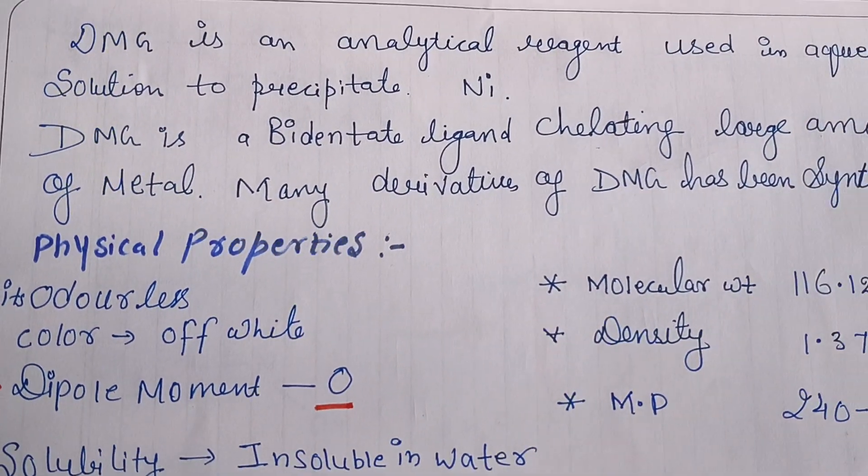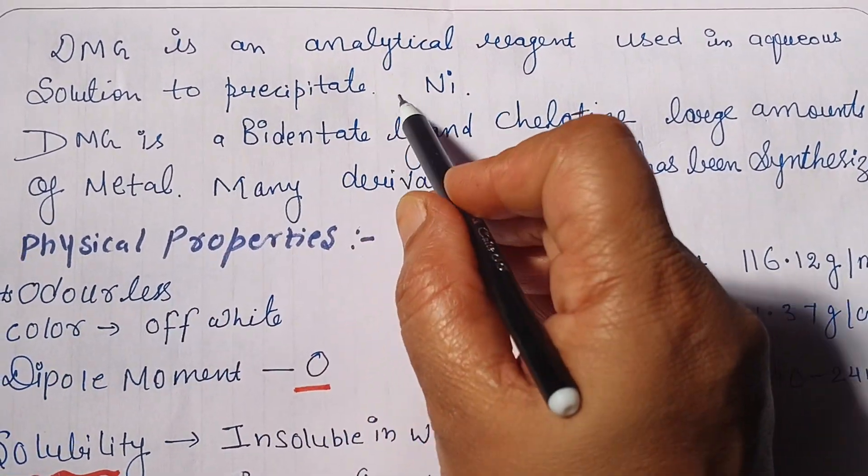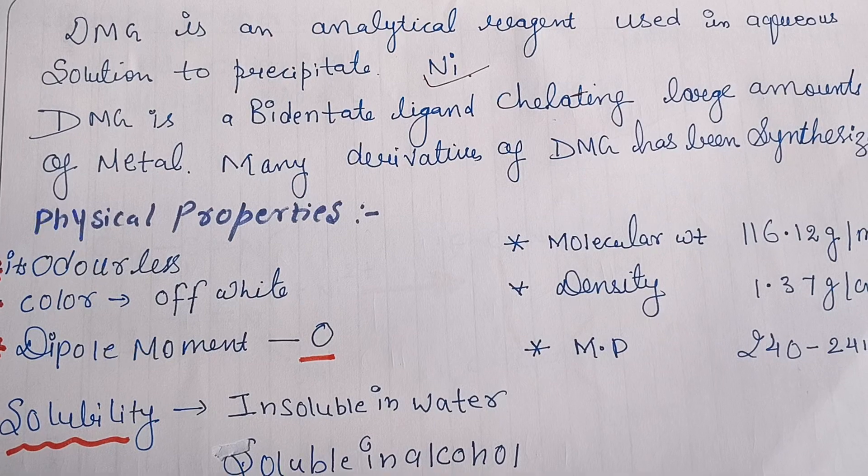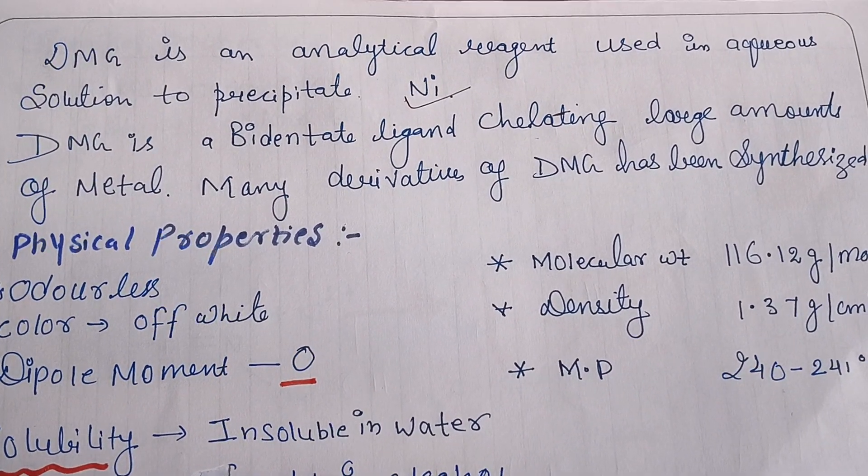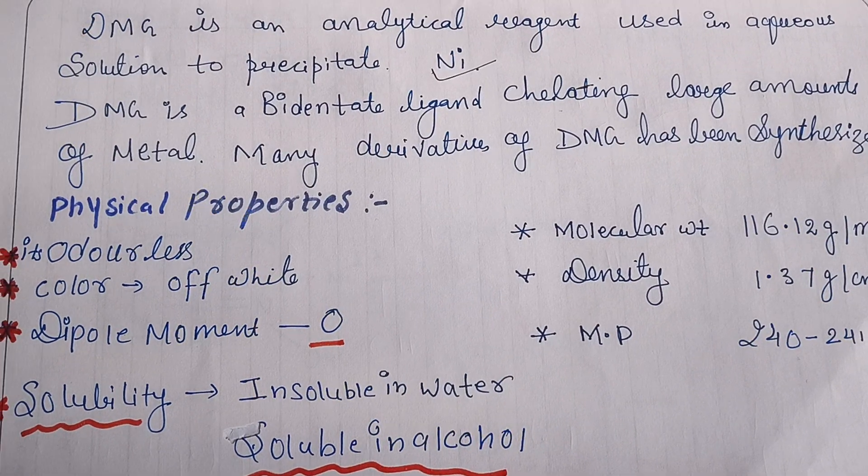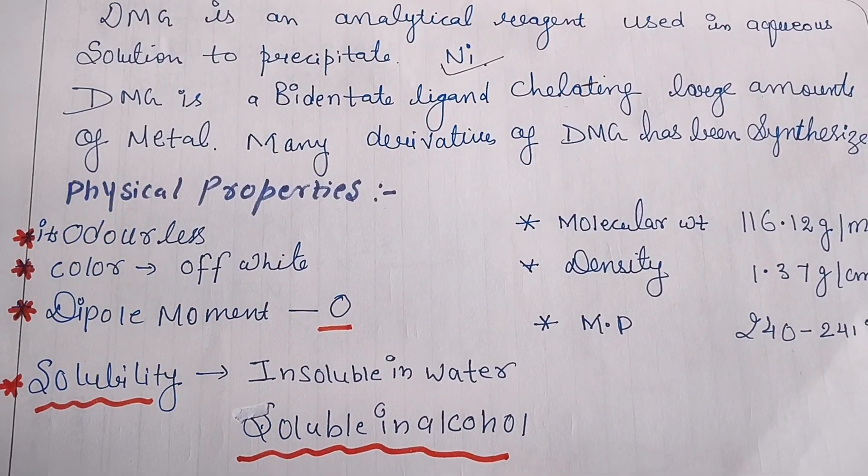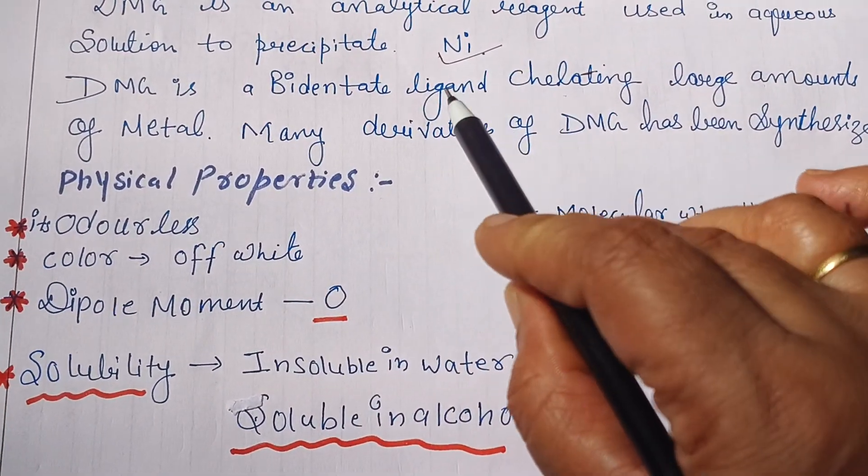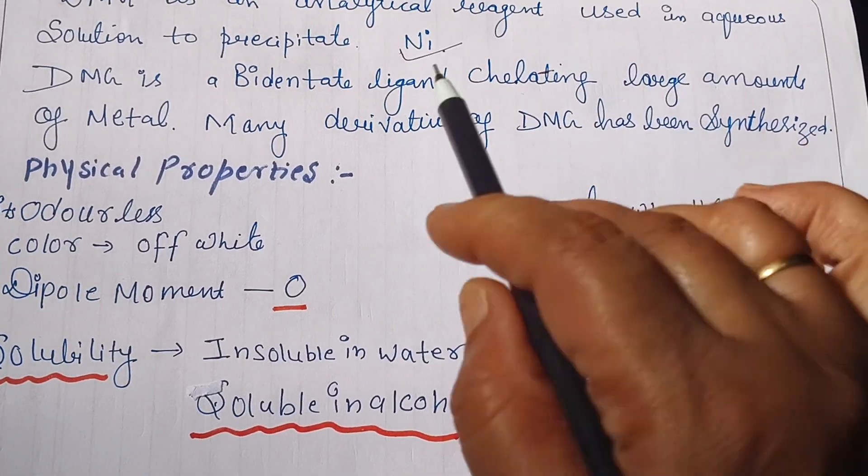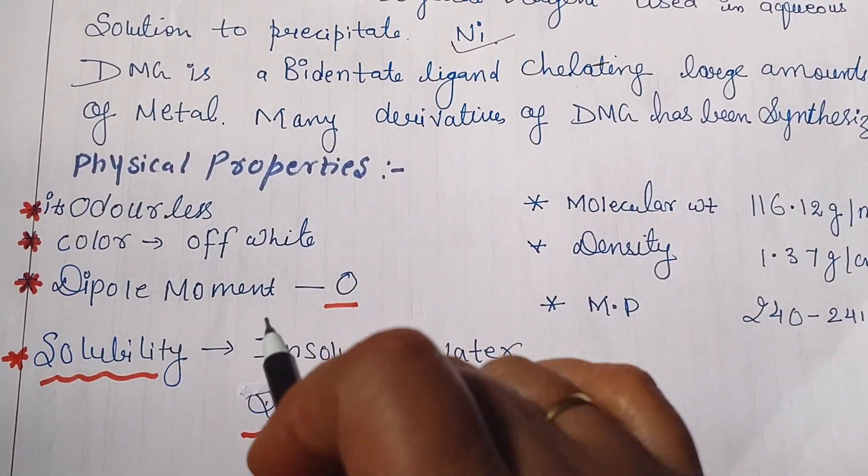It is an analytical reagent used in aqueous solution to precipitate nickel. Generally, nickel dimethyl glyoxime is used for gravimetric estimation of nickel as well as in inorganic chemistry. When doing complex synthesis, we also use DMG. It is a bidentate ligand chelating with large amounts of metals. Many derivatives of DMG have also been synthesized.